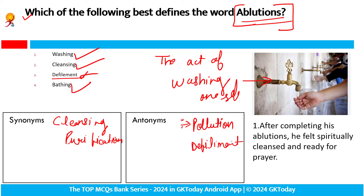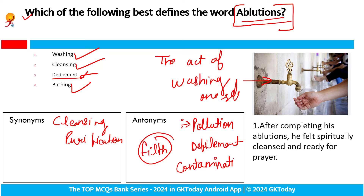Defilement hi aata hai — a good word. Fine, filth — filth word is good, filth is the synonym for pollution. Contamination, contaminate hona. Sankramit, infectious contamination. So after completing his ablution, he felt spiritually cleansed and ready for prayer.